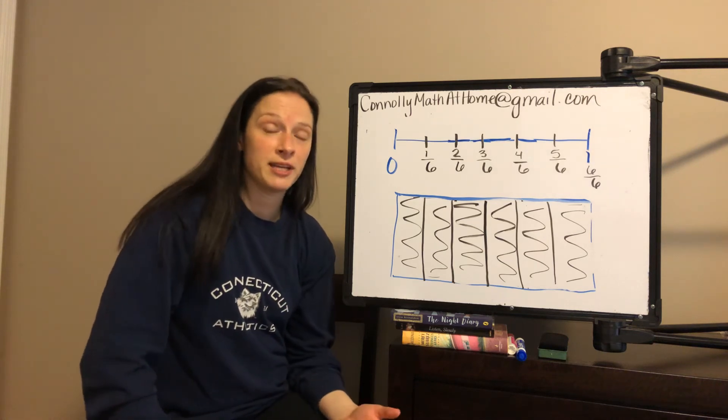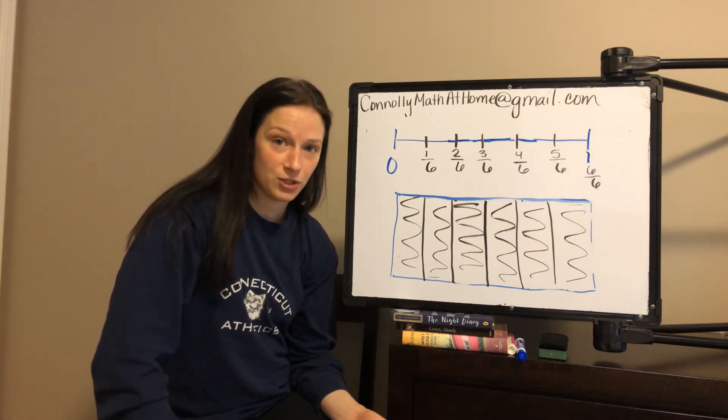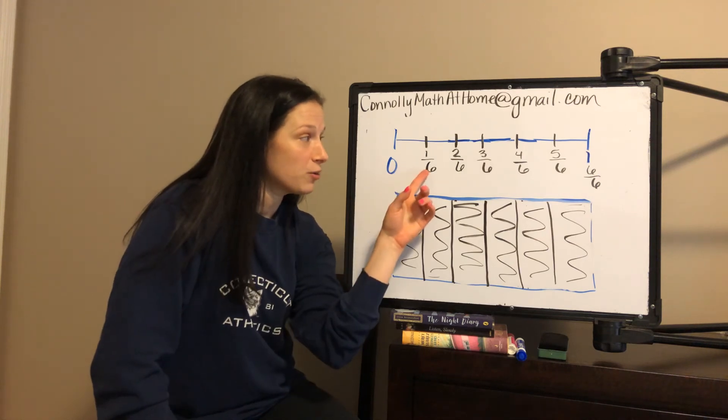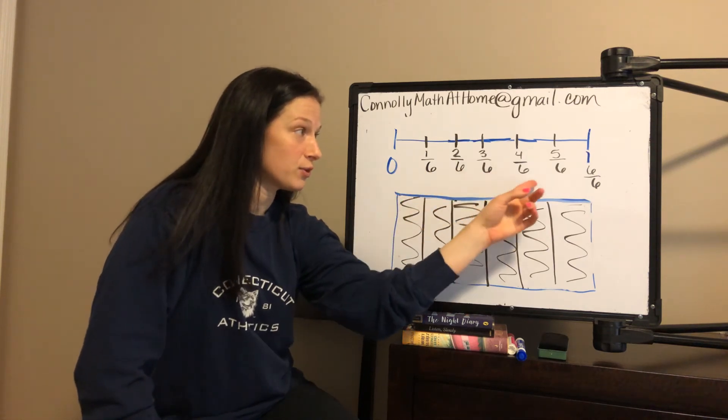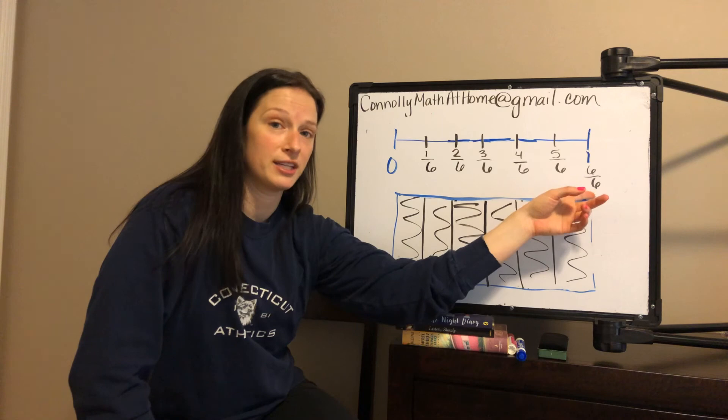I knew how many equal parts I had to divide my number line into. I labeled each part one sixth, two sixths, three sixths, four sixths, five sixths. And I know the whole thing is six sixths.